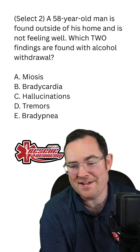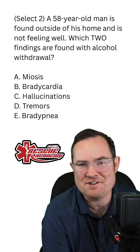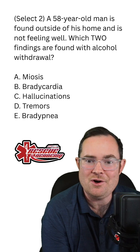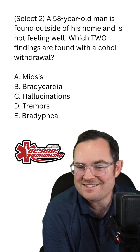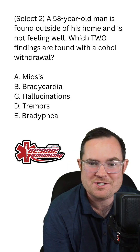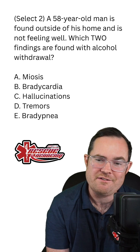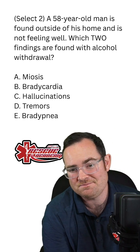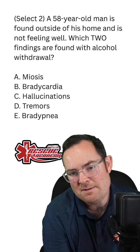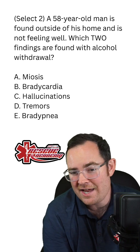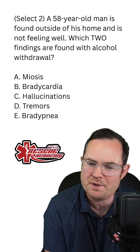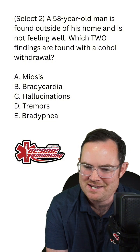We have a select two here. We have a 58-year-old male who's found outside of his home and is not feeling well. Which two findings are found with alcohol withdrawal? Would it be A, meiosis; B, bradycardia; C, hallucinations; D, tremors; or E, bradypnea?